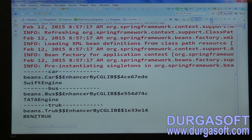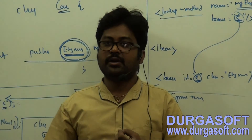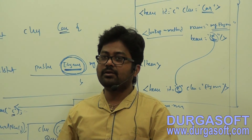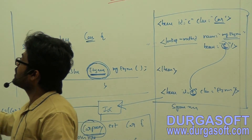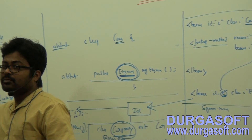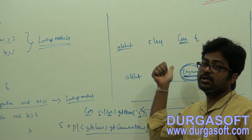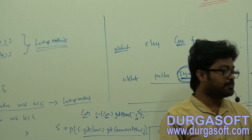So finally, by using lookup method, what we are doing is overriding. You can do overriding to an interface, overriding to an abstract class, and overriding to concrete classes also.